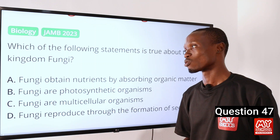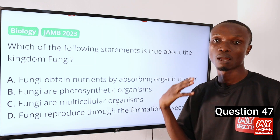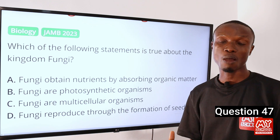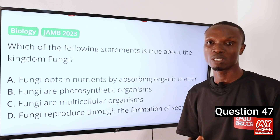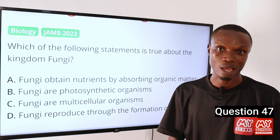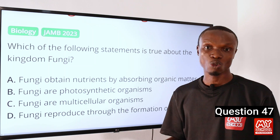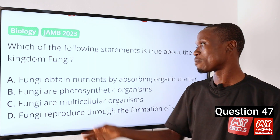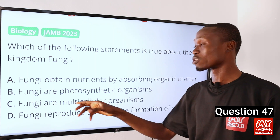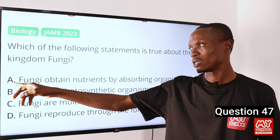The answer to this question is option A — fungi obtain nutrients by absorbing organic matter. Fungi are heterotrophic, meaning they cannot produce their own food. What they do is break down organic matter in their surroundings, such as decaying plants or dead animals, thereby absorbing the resulting nutrients. Note that most fungi are multicellular but some fungi are unicellular. So option A is the correct answer.